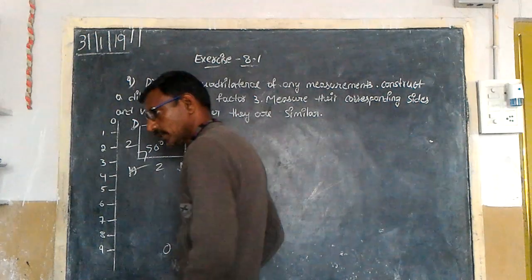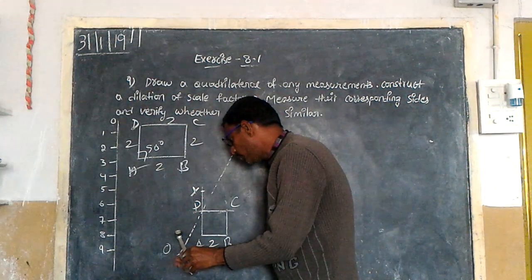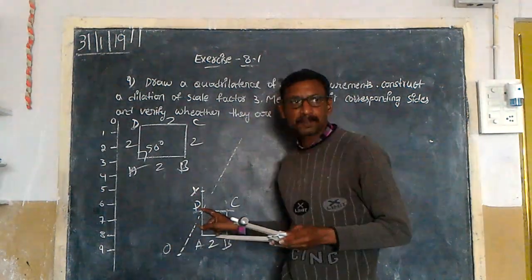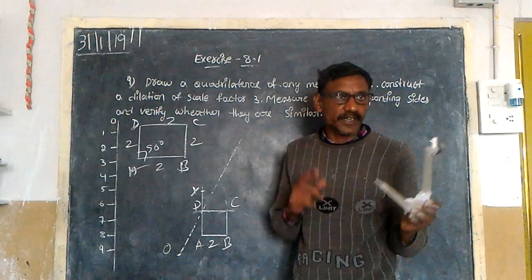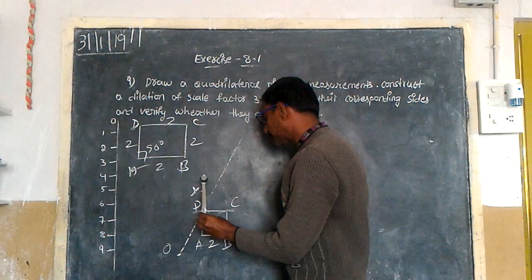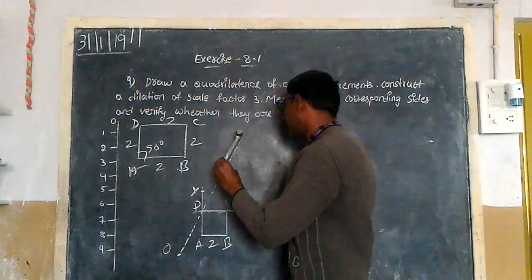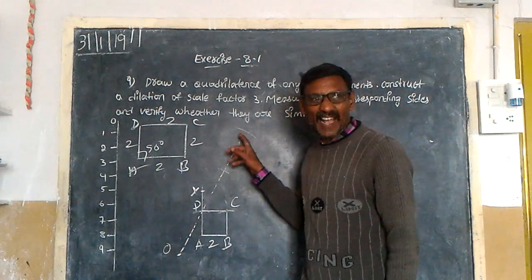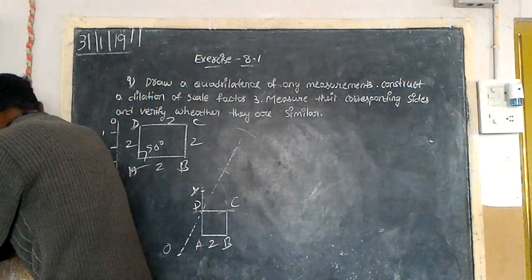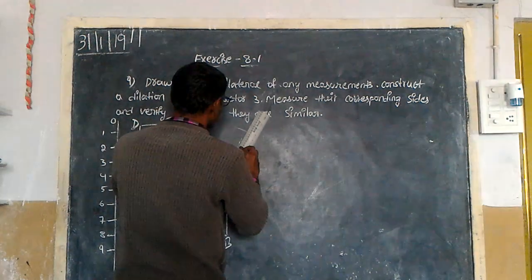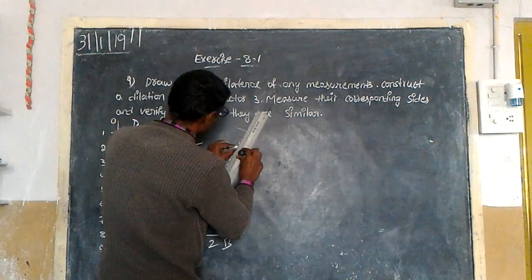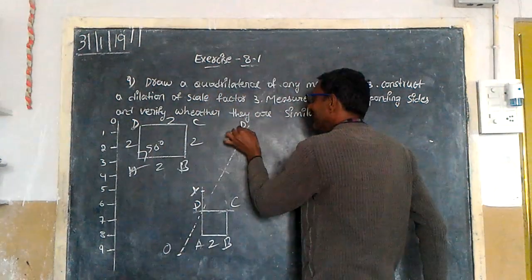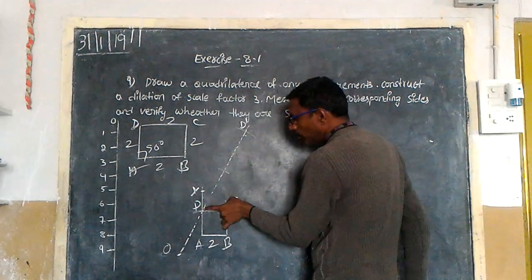With the OD distance on my compass, this is the scale factor measurement for D. How many times do you have to take it? Three times. One time, two times, and three times — here comes D dash.